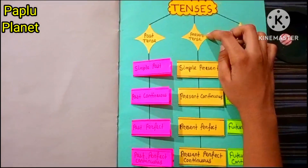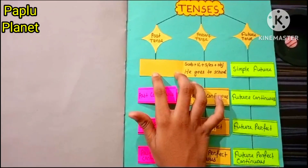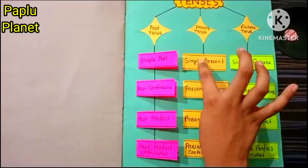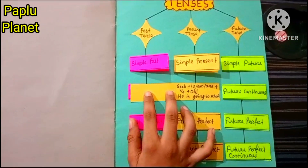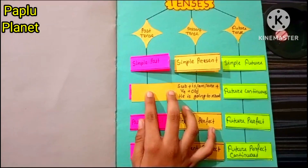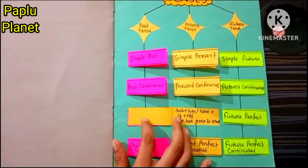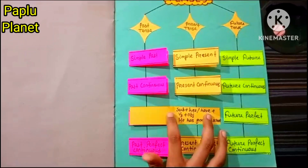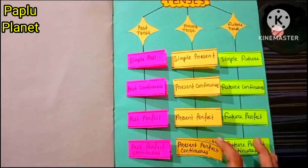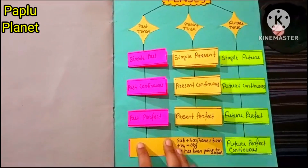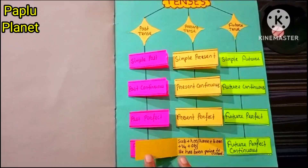Now let's go to the present tense. Simple present: subject + V1 + S/ES + object. He goes to school. Present continuous: subject + is/am/are + V4 + object. He is going to school. Present perfect: subject + has/have + V3 + object. He has gone to school. Present perfect continuous: subject + has/have + been + V4 + object. He has been going to school.